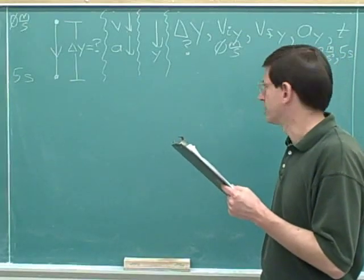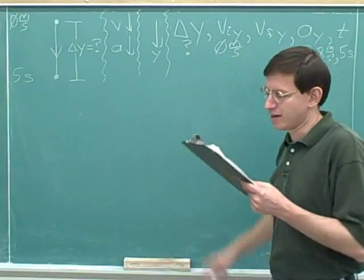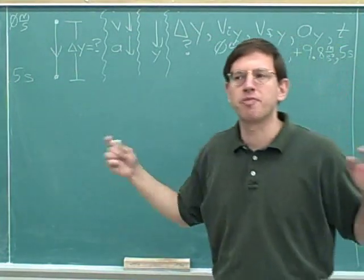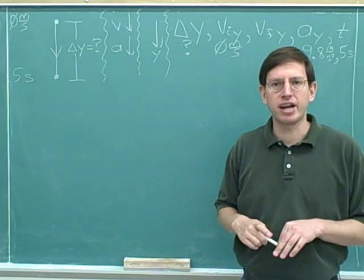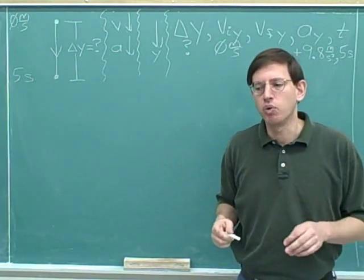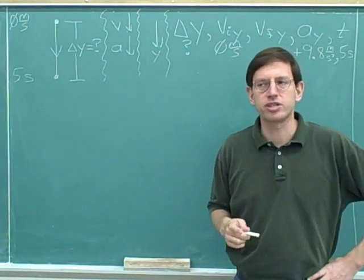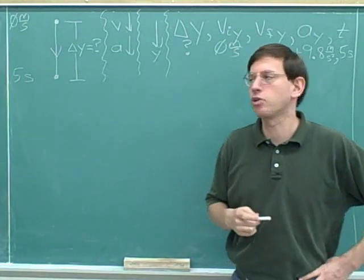All right, now we've gotten all the information and the question from the problem. We've written them down. Remember that step five is to choose a kinematics equation. And when are we ready to choose a kinematics equation? Recall that we're ready when we know three of the numbers. When we know three numbers, we can choose an equation.